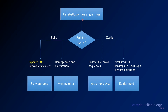If you have a cerebellar pontine angle mass, use this flowchart: first decide if it's solid or cystic — enhancement tells you that. If it's solid and expands the IAC with cystic areas, it's probably a schwannoma. If it's homogeneously enhancing or has calcification and is located outside the IAC, that's probably a meningioma.